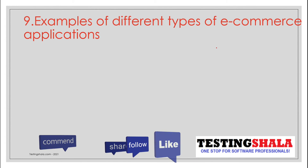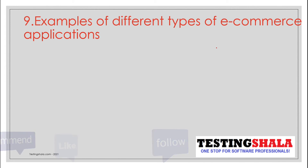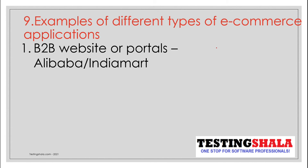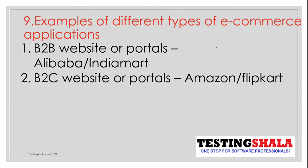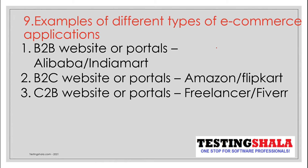Examples of different types of e-commerce applications: B2B websites or portals like Alibaba and IndiaMart; B2C websites or portals like Amazon and Flipkart; and Consumer to Business websites such as Freelancer and Fiverr. These are some of the websites that deal with their respective e-commerce models.